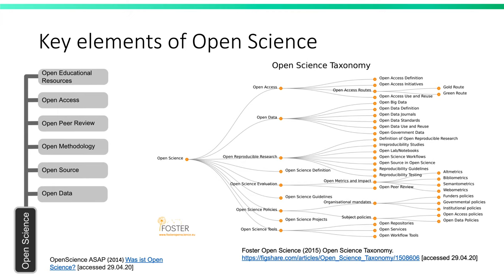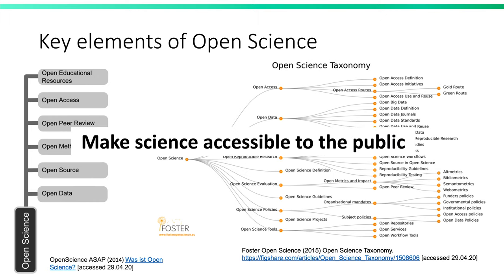I wanted to start off by talking about open science, which is obviously very important to the topic. There have been a number of different taxonomies and definitions set out to explain the key elements of open science, but in principle they all relate to the idea that it should be making science as accessible to the public as possible.